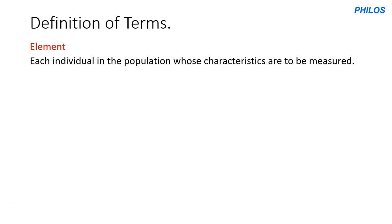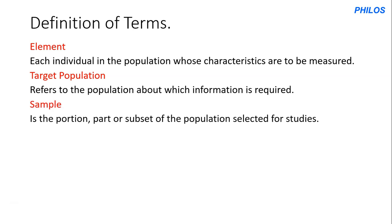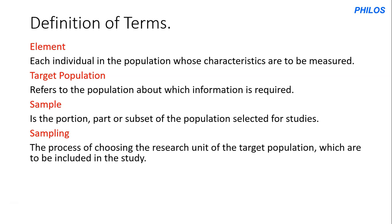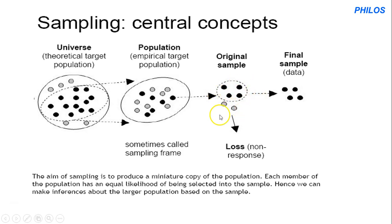Sampling is a procedure a researcher uses to gather persons, places, or things to study from a population. There are some terminologies you need to know. The first is elements — each individual in the population whose characteristics are to be measured. The second is target population — the population about which information is required. For example, if you require information from Ghanaian farmers, then Ghanaian farmers is the target population. Sample is a portion or subset of the population selected for study. Sampling is the process of choosing the research units of the target population to be included in the study.